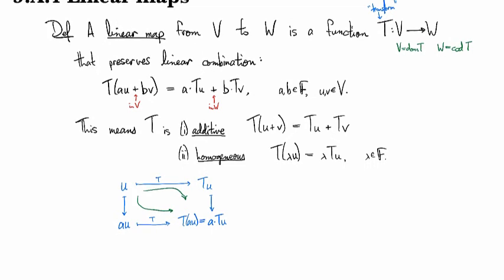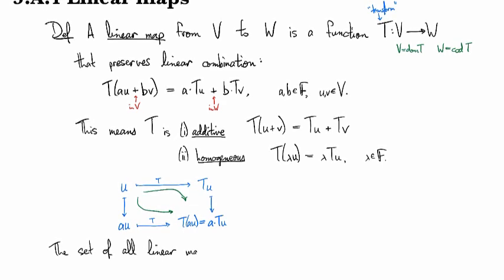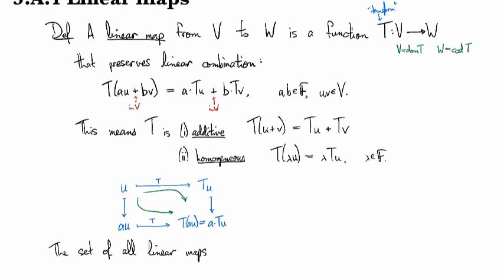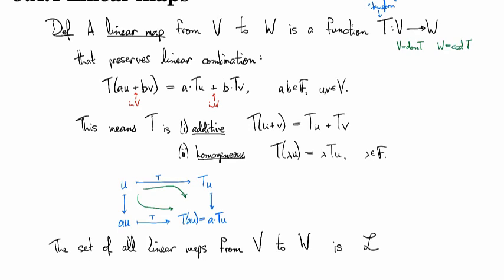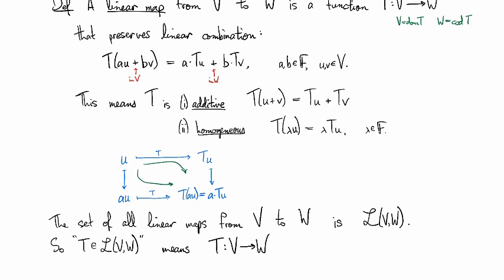We also have this idea that the set of all linear maps is going to be very important for us. The set of all linear maps from V to W is denoted script L for linear, and then V comma W. When I write T is an element of script L(V,W), this means that T is a linear map from V to W. So it's a function from V to W and it satisfies the additive and homogeneity conditions.